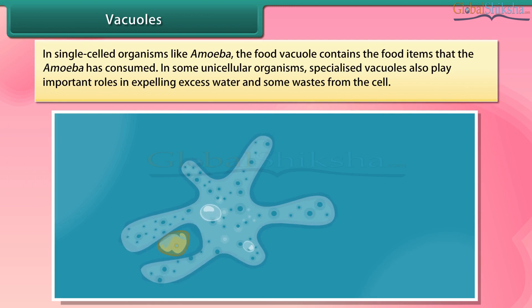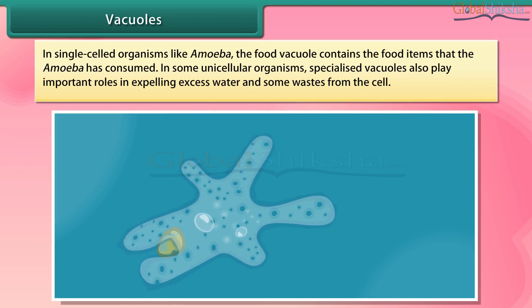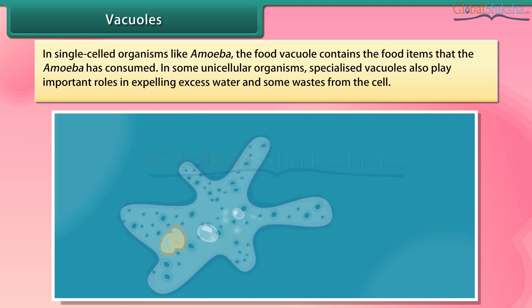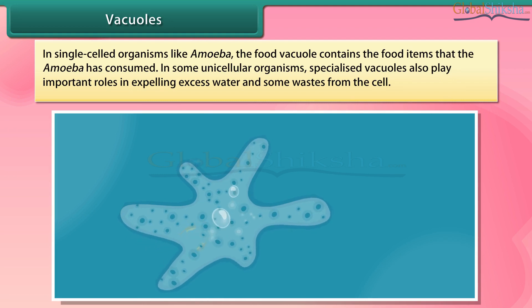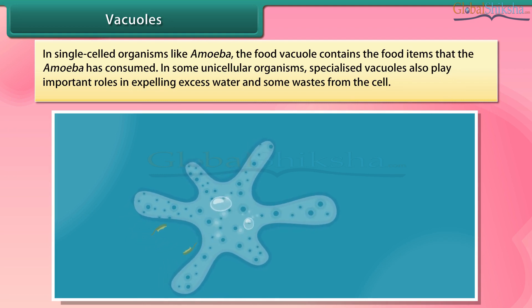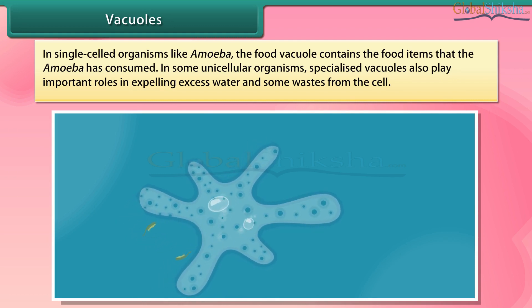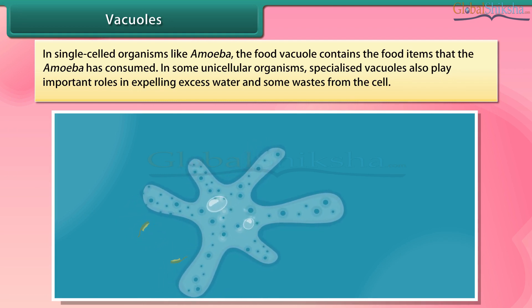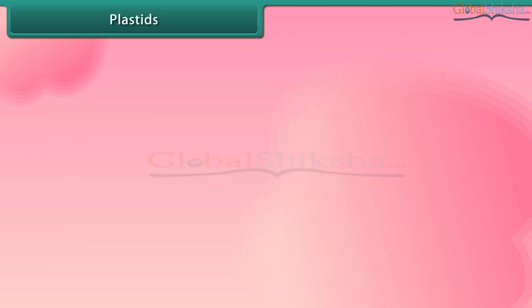In single-celled organisms like amoeba, the food vacuole contains the food items that the amoeba has consumed. In some unicellular organisms, specialized vacuoles also play important roles in expelling excess water and some wastes from the cell.